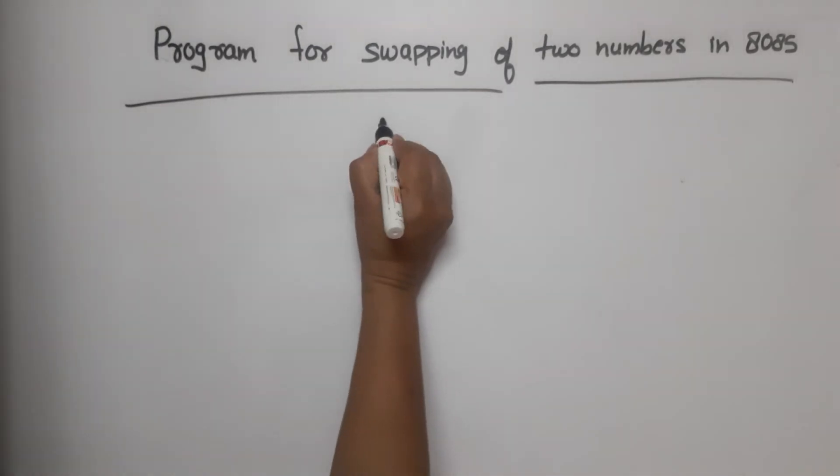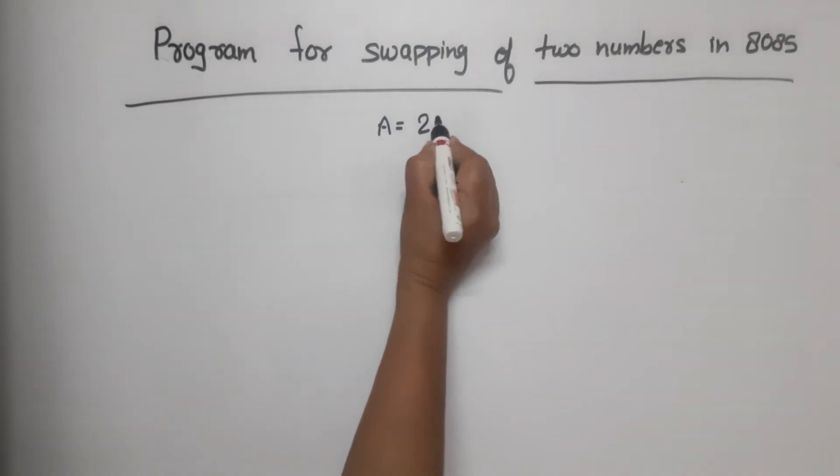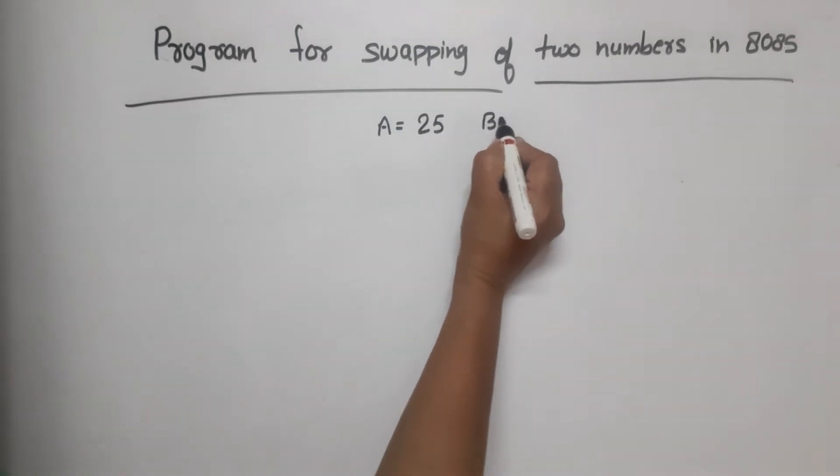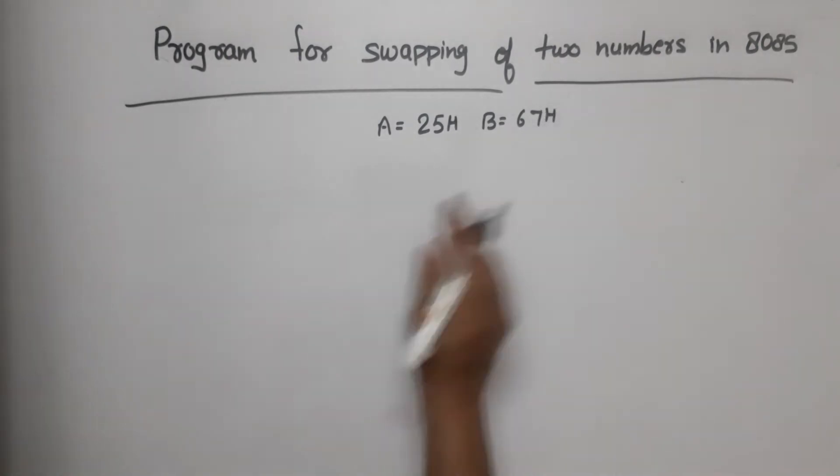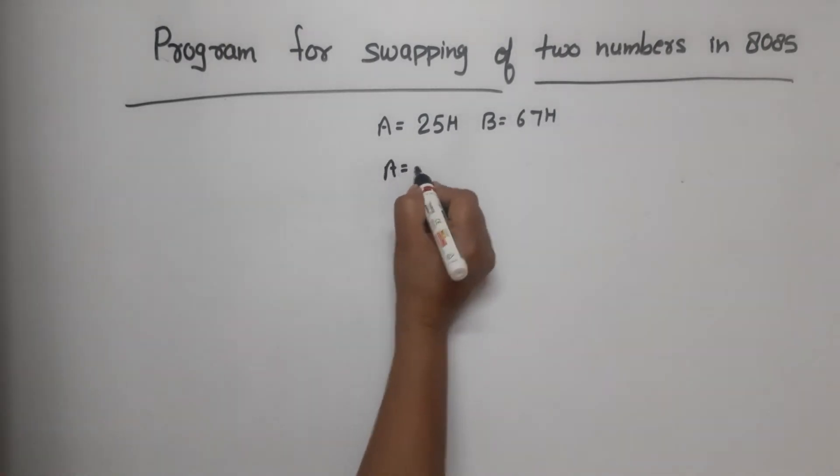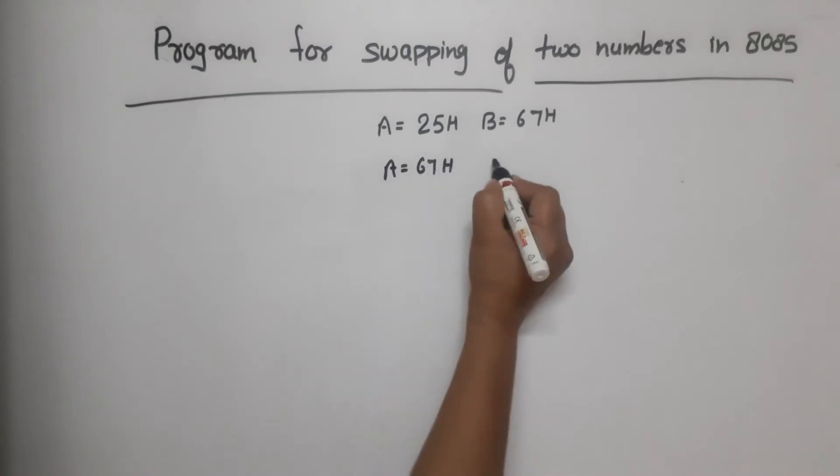Suppose we have accumulator A with 25H and register B with 67H. So after swapping our value should be A equals 67H and register B should be 25H.